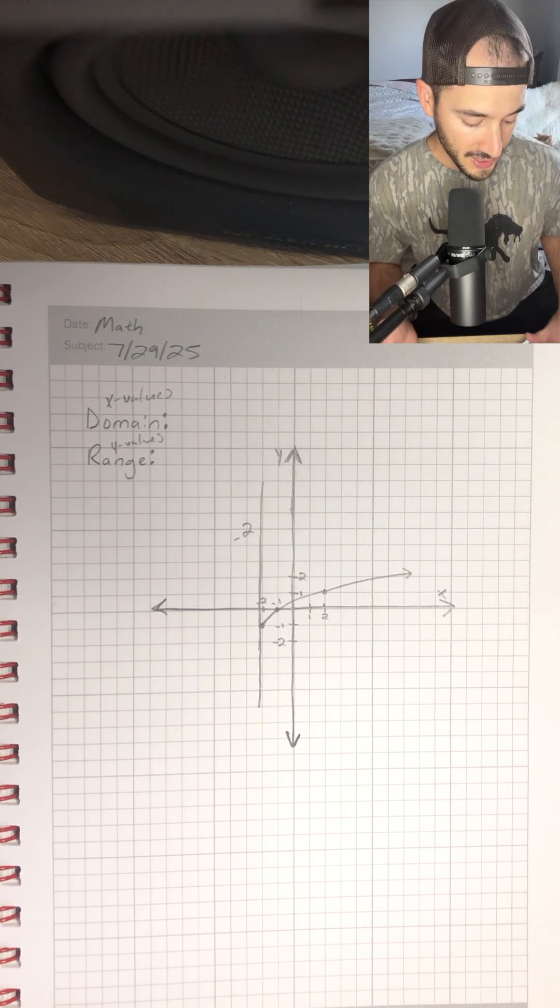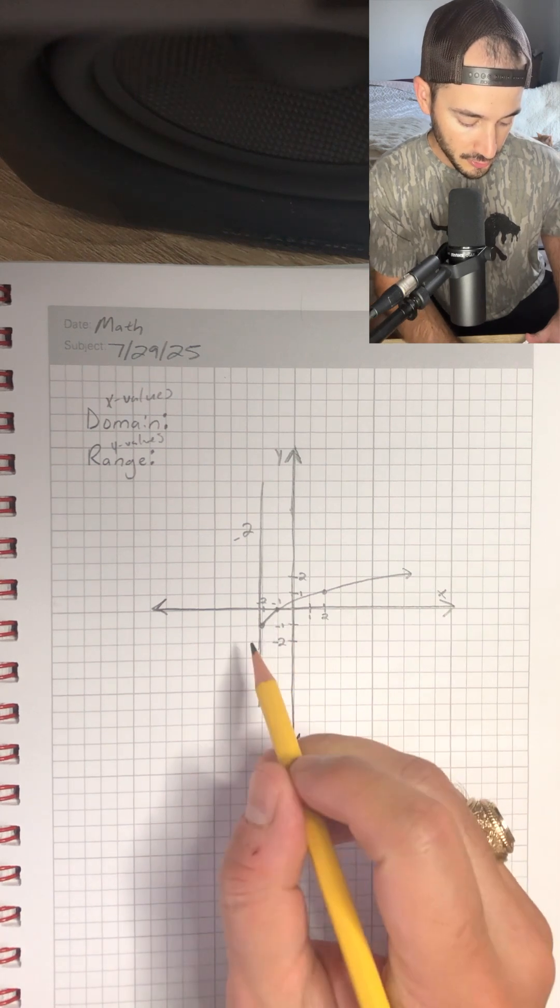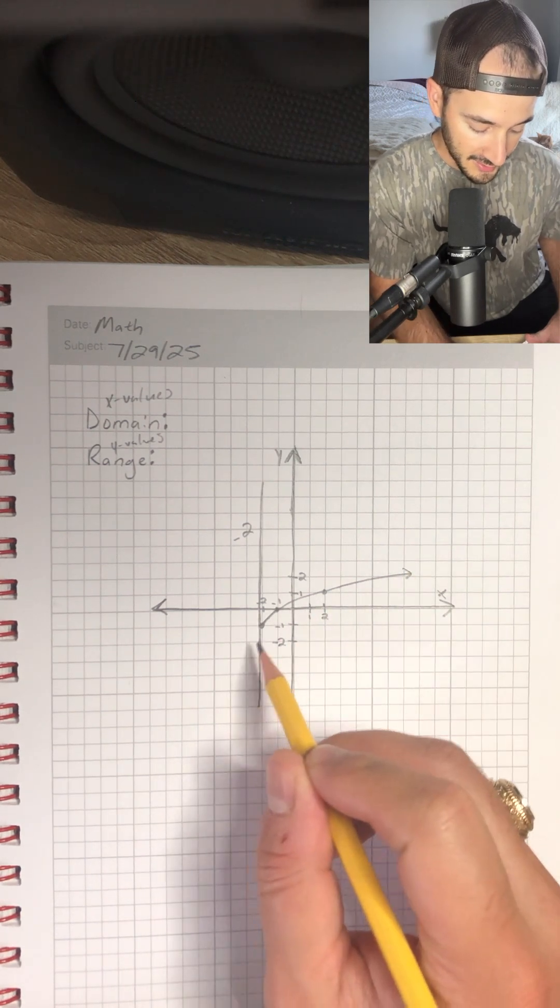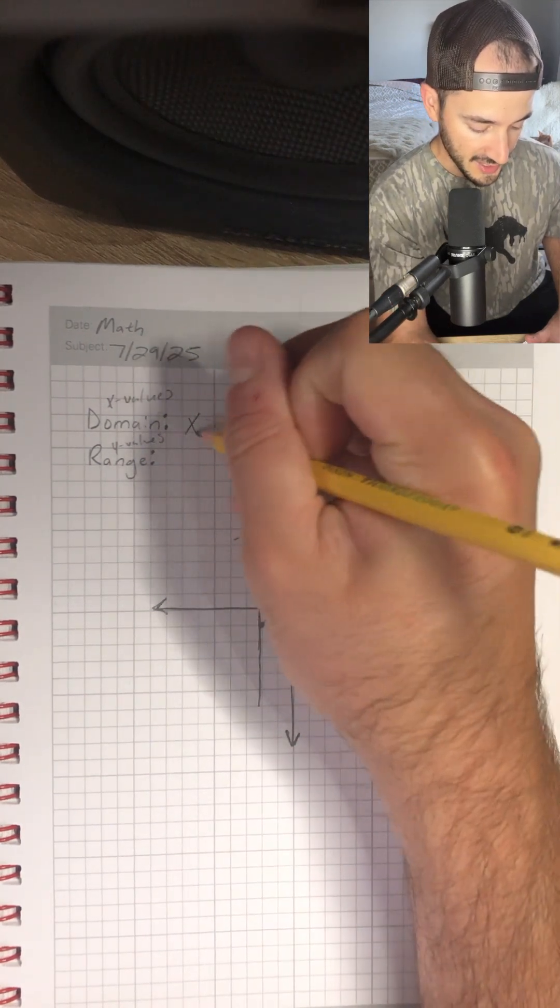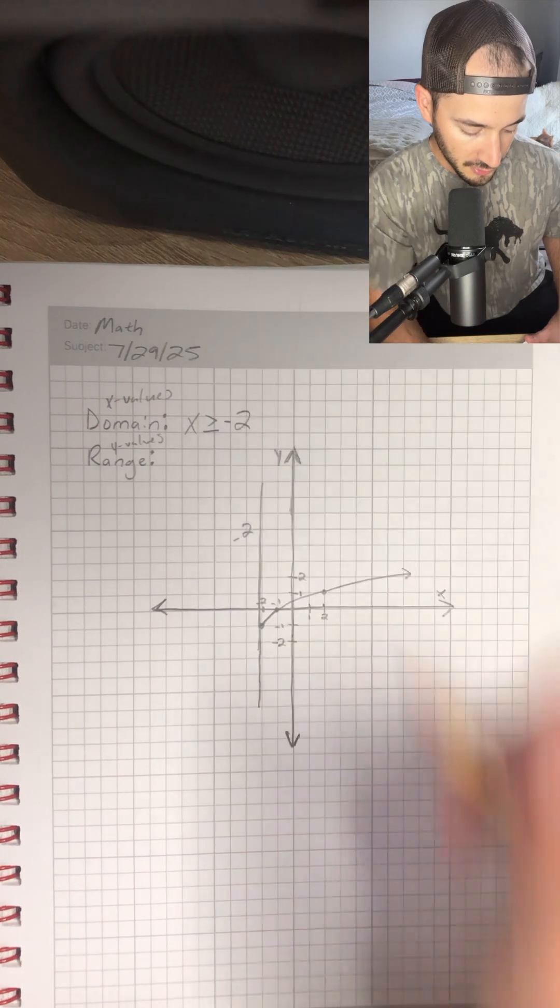So that means the domain is x is greater than or equal to negative 2 because it continues to go to the right forever and ever. So the domain is x is greater than or equal to negative 2.